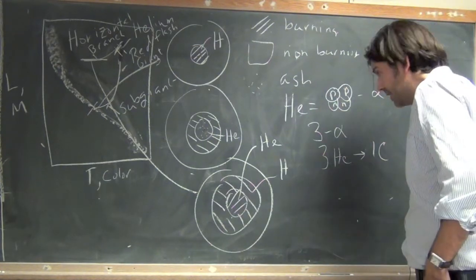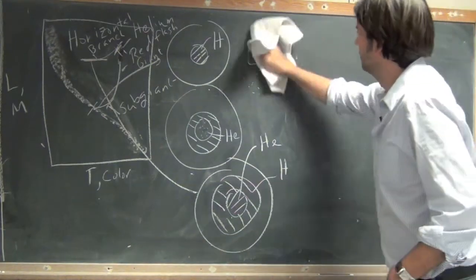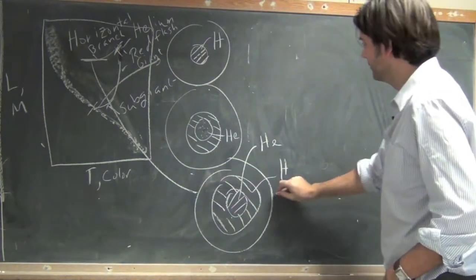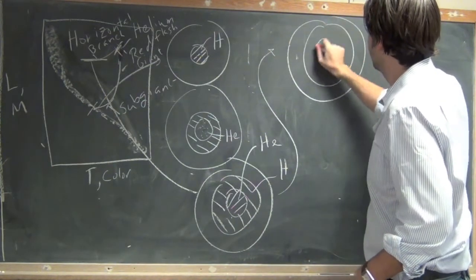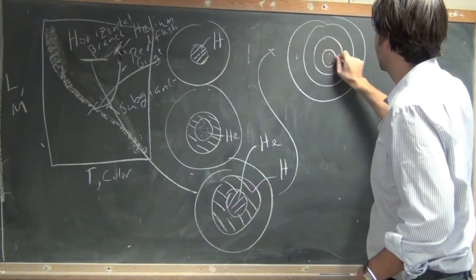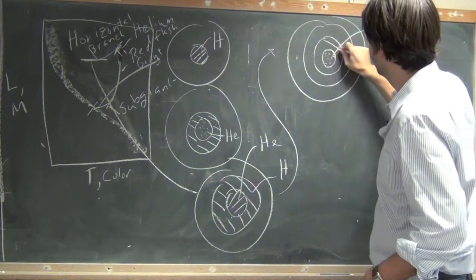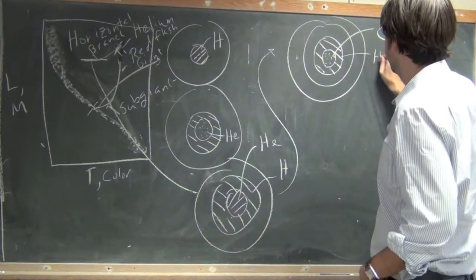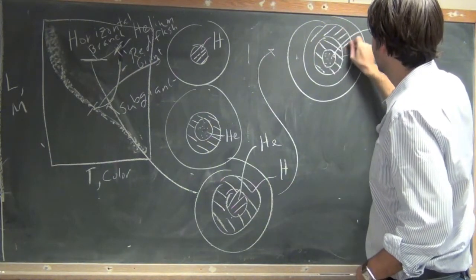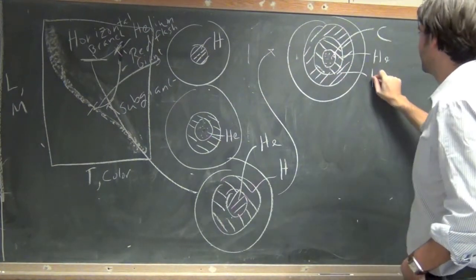So you burn your helium in the core into carbon, and so you end up with a state of the star that looks like this. So I have a carbon ash core, which is not burning, around that I have helium burning in a shell, and then around that I have hydrogen burning in a shell.